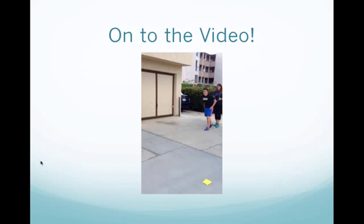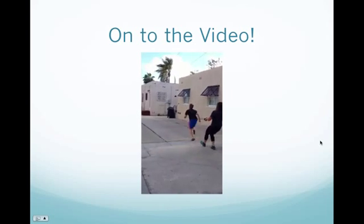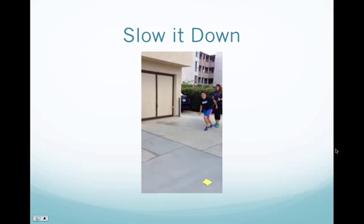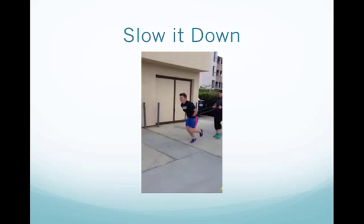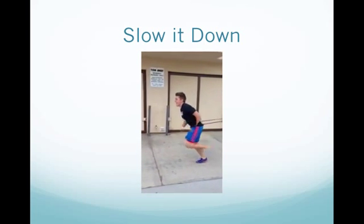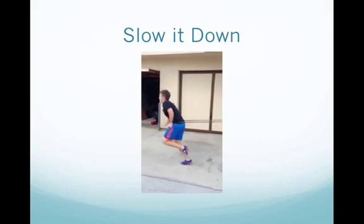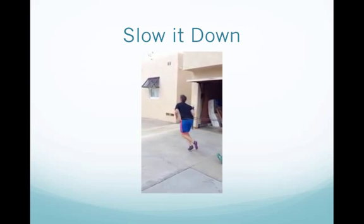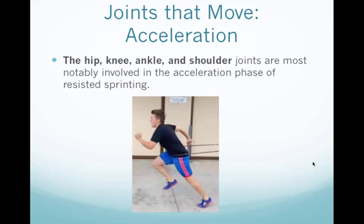Here is the video of the sprinter. I'll show you a normal speed first, then slow it down with an anterior view at one-eighth speed. What we see here is rapid acceleration of the hip flexor, rapid acceleration of knee flexion, rapid acceleration of shoulder flexion, and rapid acceleration of plantar flexion of the calf — these are the concentric actions producing positive mechanical work, as the displacement is in the same direction as the force being produced. The hip, knee, ankle, and shoulder are the joints most notably involved in the acceleration phase of sprinting.